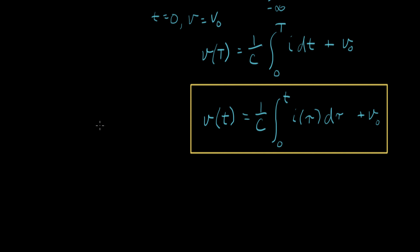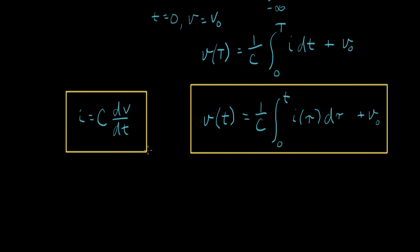We have the other form of the equation that goes with this, which was I equals C·dV/dt. So there are the two forms of the capacitor equation. Now I want to do an example with the integral form to see how this works when we have a capacitor circuit.